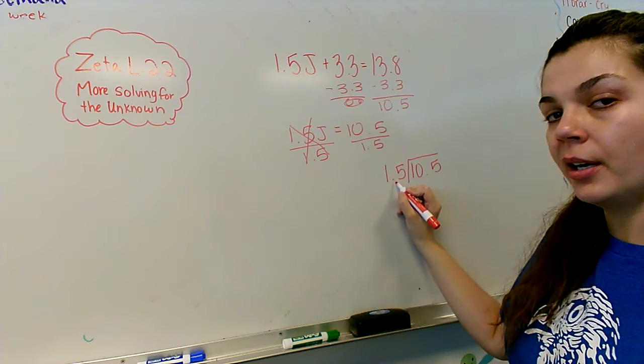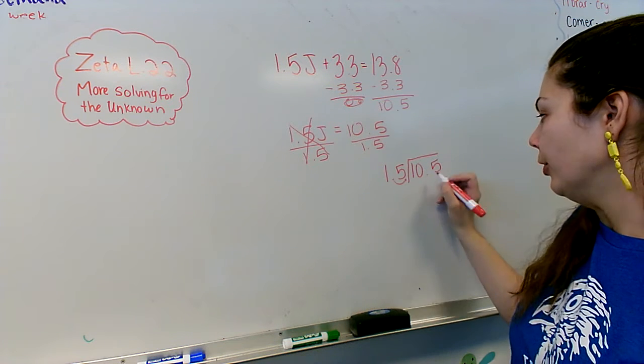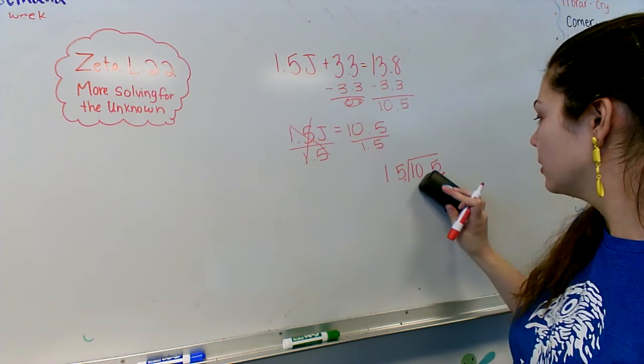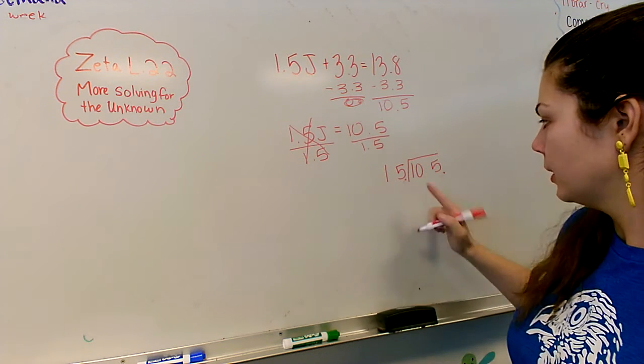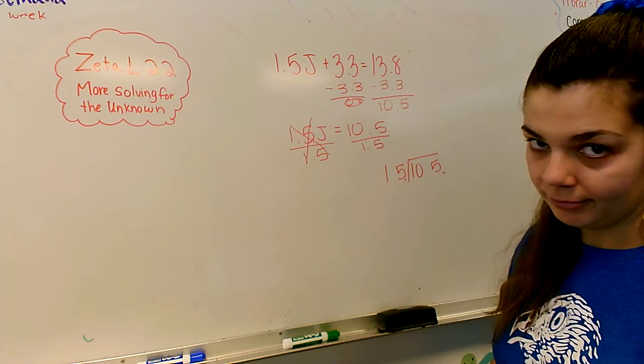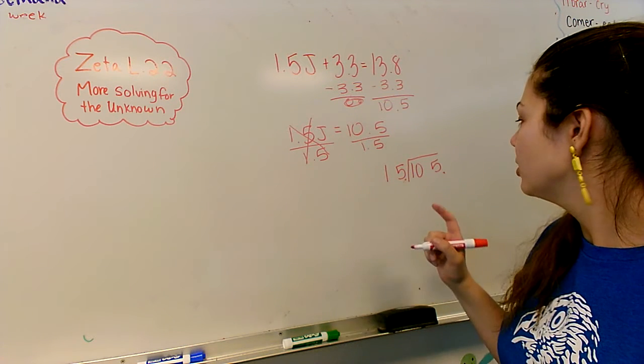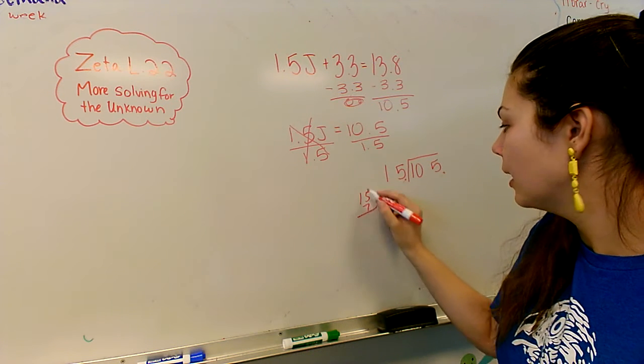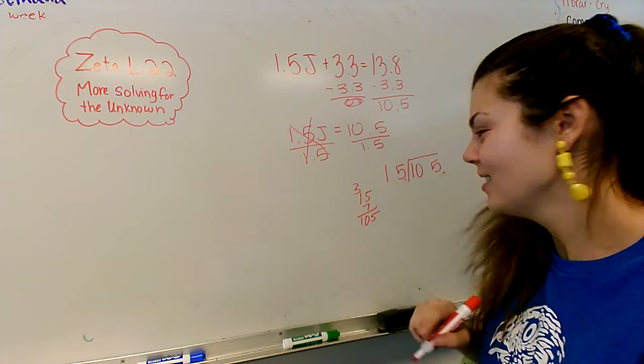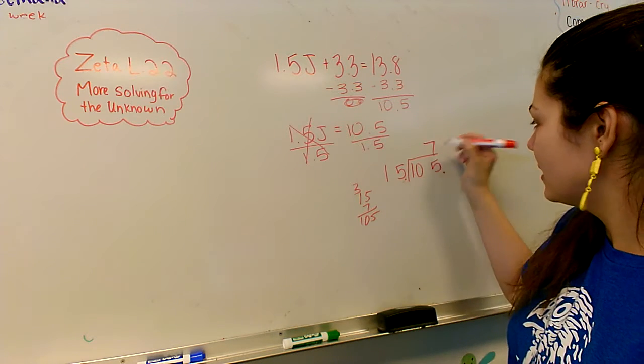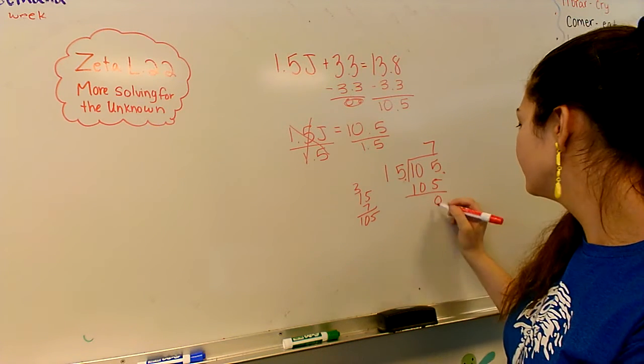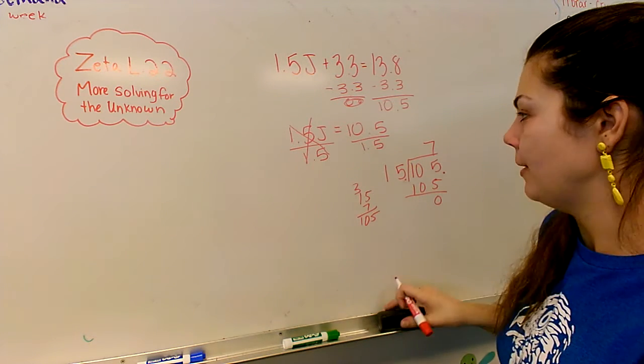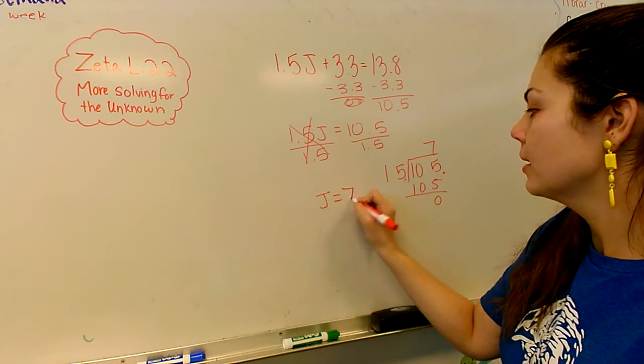1.5 divided by 10.5. Okay, I have a decimal here which I want to move over. If I move this one over one, I move this one over one. So now it's 15 divided by 105. How many 15s go into 10? None. How many 15s go into 105? Let's see. It's not 10, so let's do 15 times 7. 35. Hey, right off the bat. That was a guess. All right, so 15 times 7 is 105. And I don't even have to go over anymore, so I don't have to put my decimal up and keep going. It's just 7. So I have J equals 7.